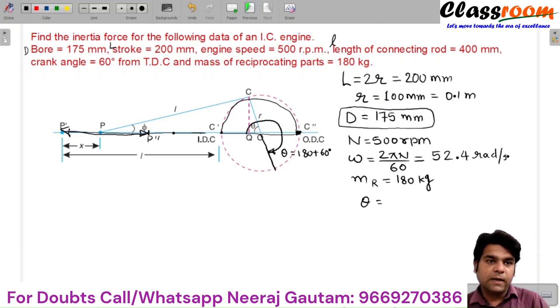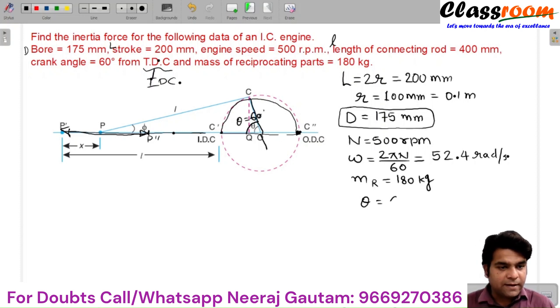Oh, sorry. The theta is from TDC. TDC is equivalent to inner dead center, so the theta is measured from inner dead center. This theta is same, so I will erase this calculation of theta. Inner dead center and TDC are equivalent. This is the angle theta which is 60 degrees. So angle theta is simply 60 degrees. There is no manipulation of value of theta.